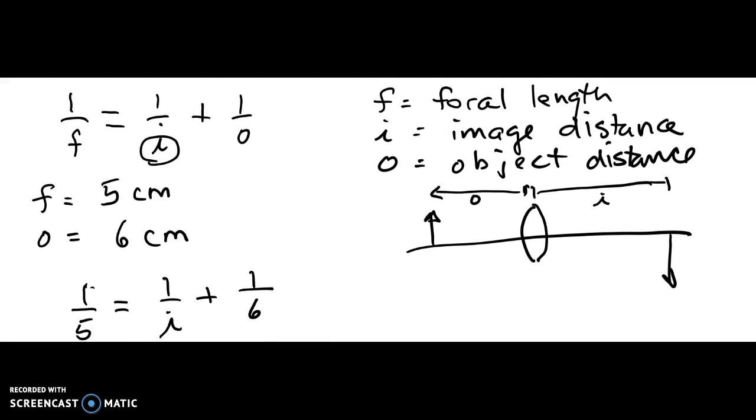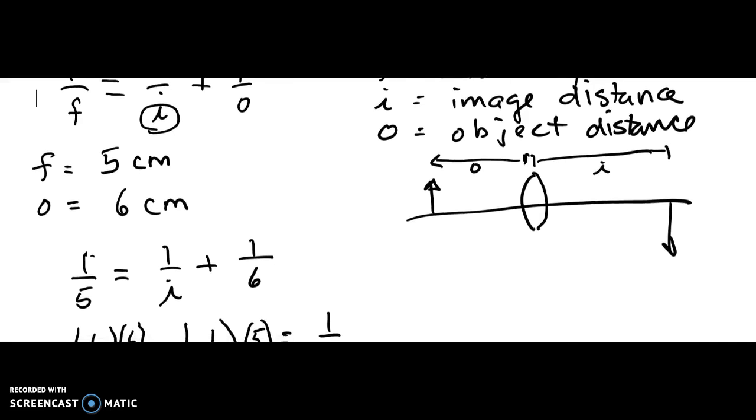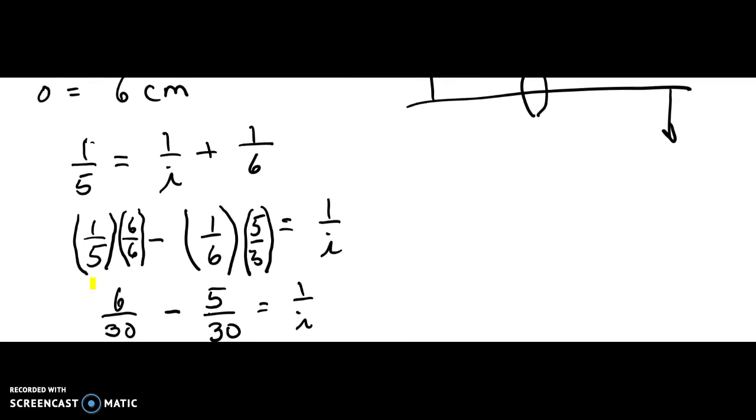So you just write the equation. You find your values of F and usually O. Plug them into the equation. Make yourself have a common denominator.